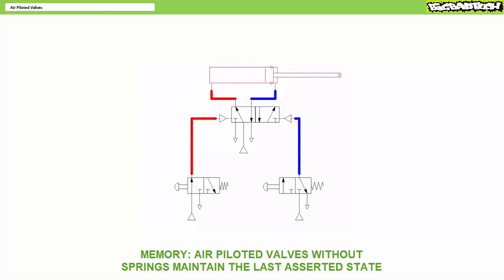When the air pilot on the left is asserted, the valve shifts to a position that extends the cylinder. When an operator stops pressing the push button on the left, the spool remains in this position and the cylinder remains extended.